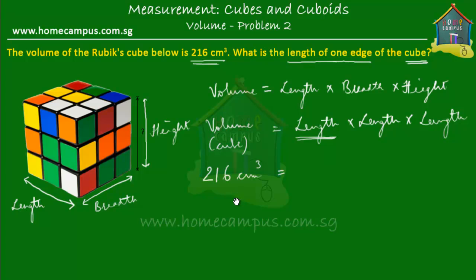You can start by trying: one times one times one is one, so that's no use. Two times two times two is eight, also not good. You can try three, four, five, six, and so on — guess and check. Let's try four: four times four is 16, times four again is 64 — not right. How about five? Five times five is 25, times five again is 125. So we're close but not there yet.